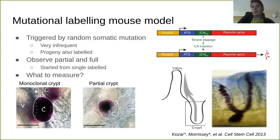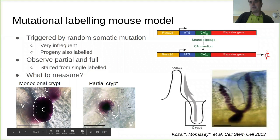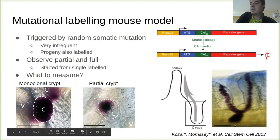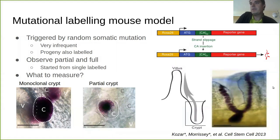If you look at the mouse tissue, you can find completely mutant crypts and partially mutant ones — these patterns emerge. Here from the side you can see a crypt with stem cells at the bottom and streams of mutant cells migrating up the villus. This mutation is completely neutral — it just expresses something you can see.